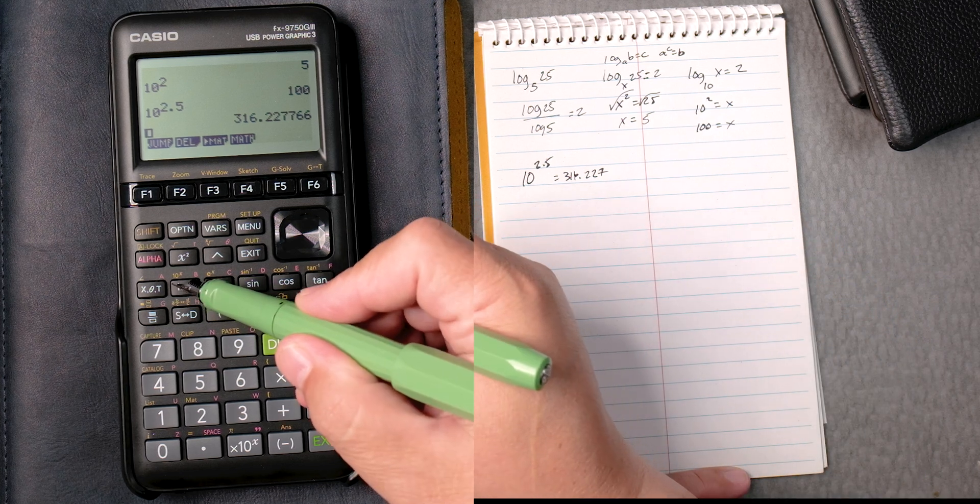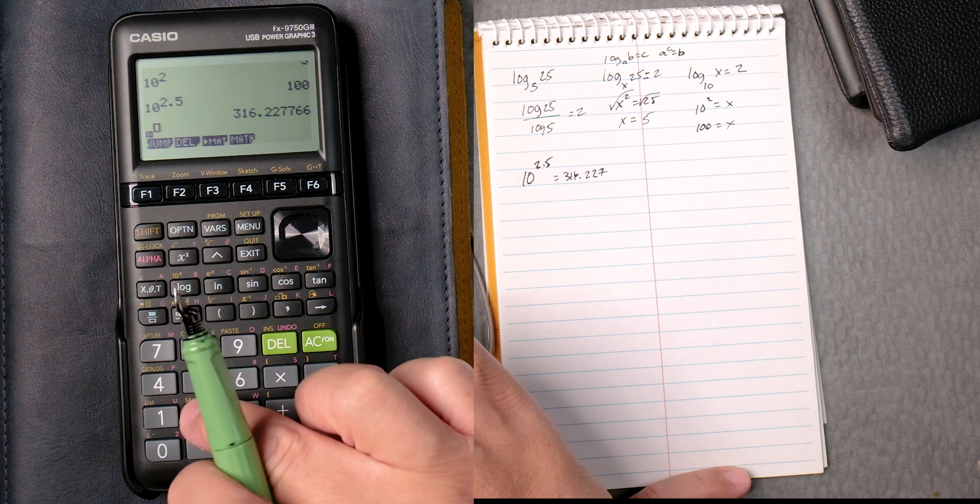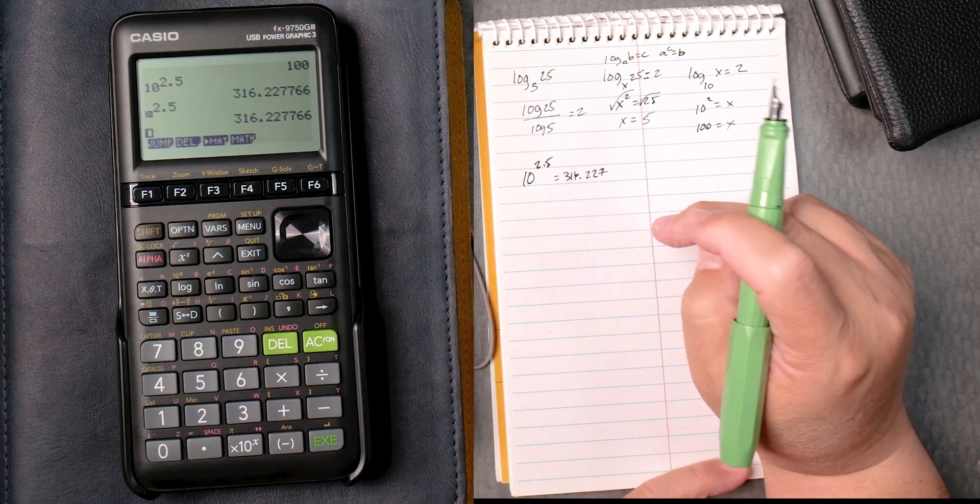There's an anti-log key, 10 to the x, so shift, 10 to the x, 2.5, execute, gives you the same answer.